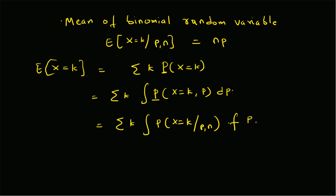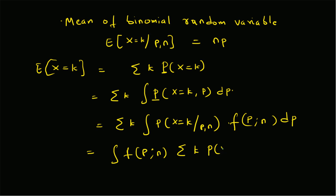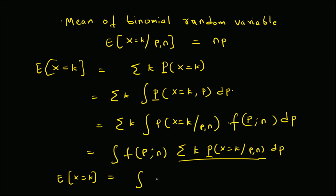This gives us the conditional probability mass function times the density f(p) with parameter n, integrated over dp. We can rewrite the summation of the integral as the integral of the sum: the integral of f(p) times the summation over k of the conditional probability mass function given p and n. This inner summation — k times P(x = k | p, n) — is nothing but n times p, the conditional mean.